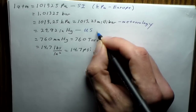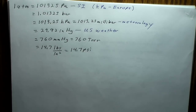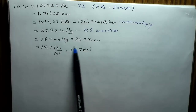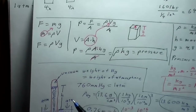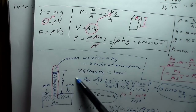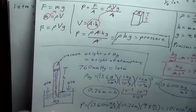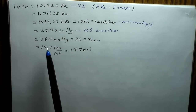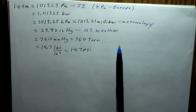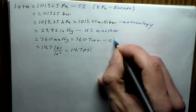In the U.S., weather reports give pressure in inches of mercury. Inches of mercury and millimeters of mercury are the same concept — just different units. One atmosphere is 29.92 inches of mercury, and we use English units in the U.S. Millimeters of mercury, also called Torr (named after Torricelli), are very common in chemistry.